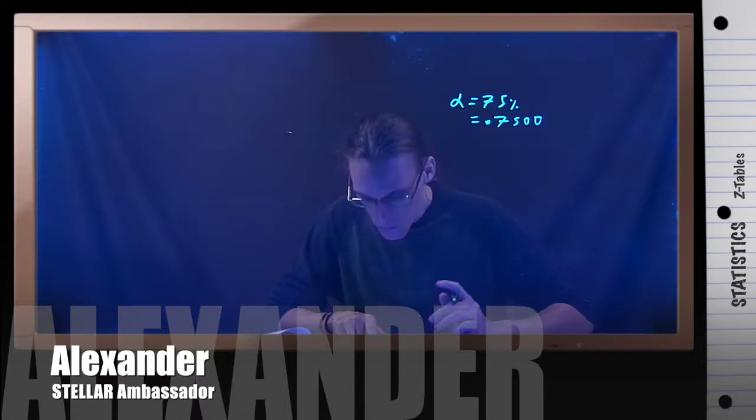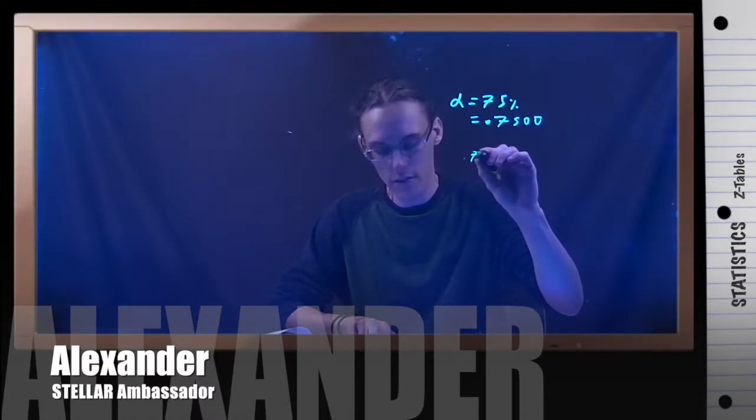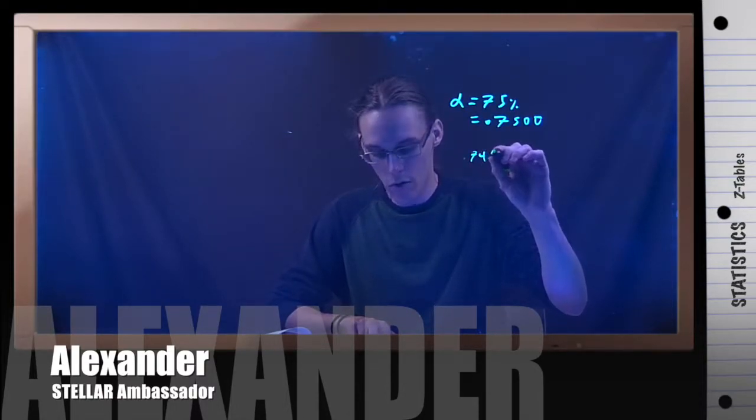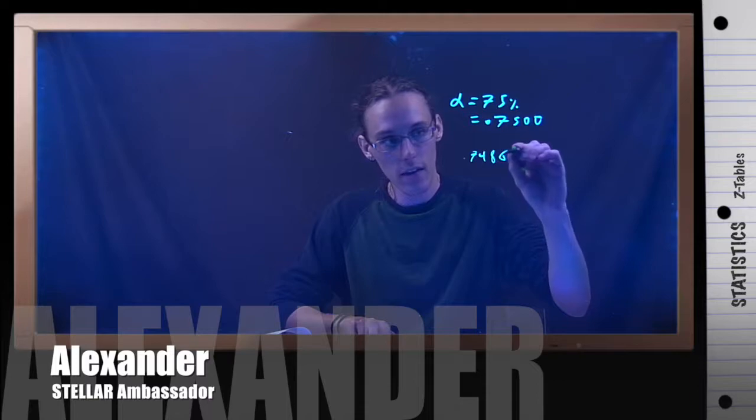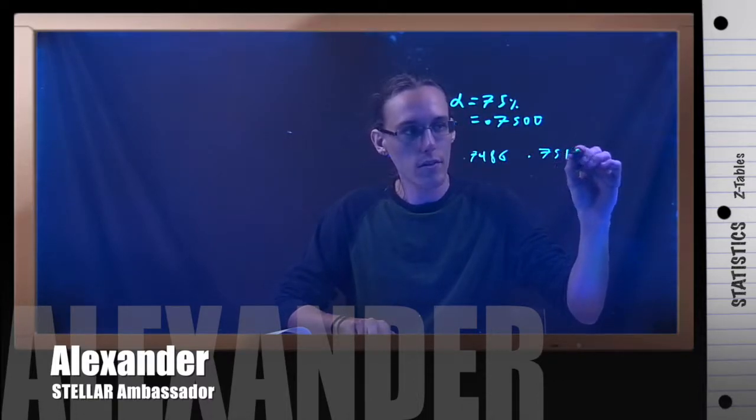And the closest thing here — I've got two values. I've got an area of 0.7486, and I've got an area of 0.7517. And I need to decide which one of these I'm going to use.